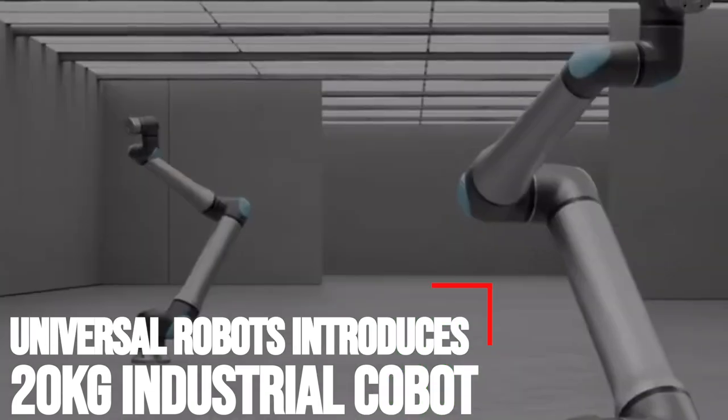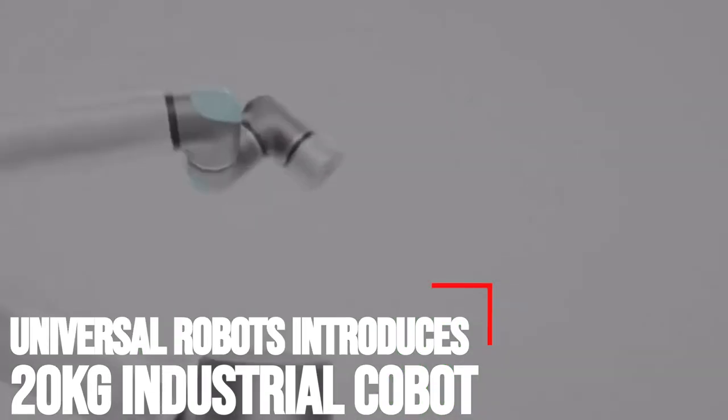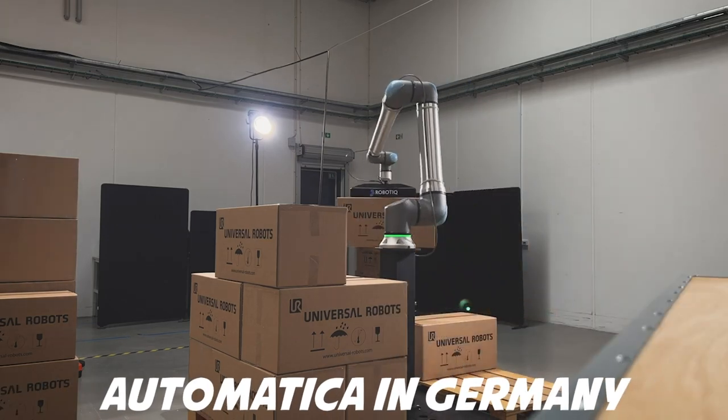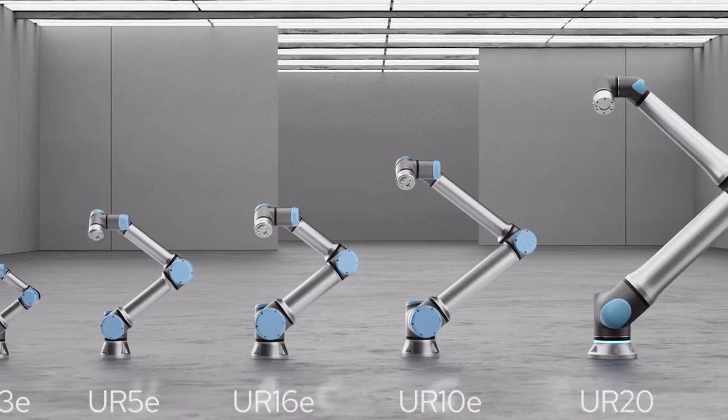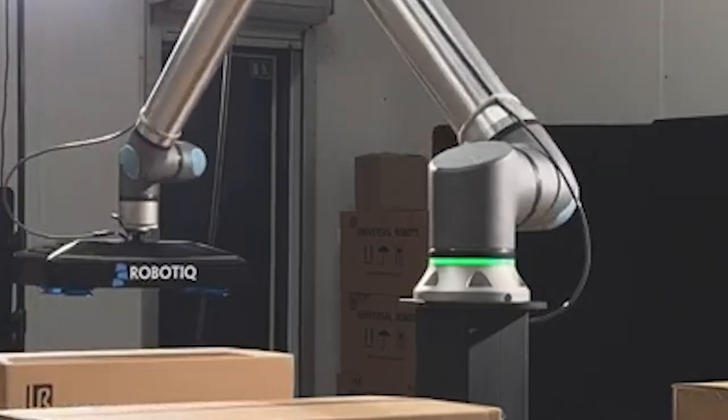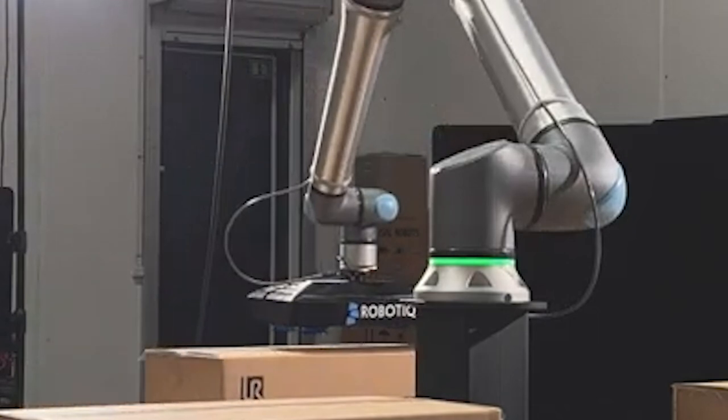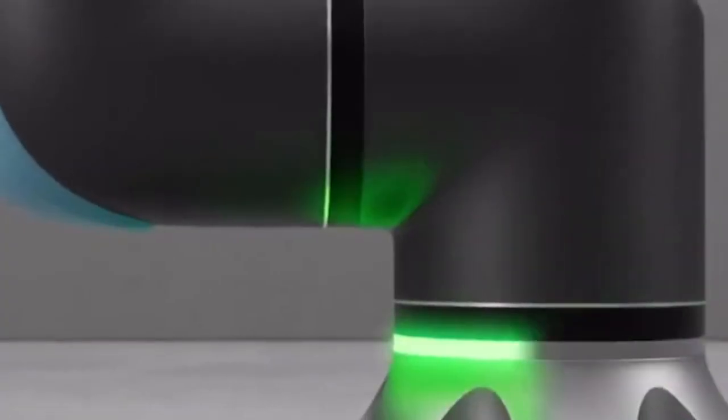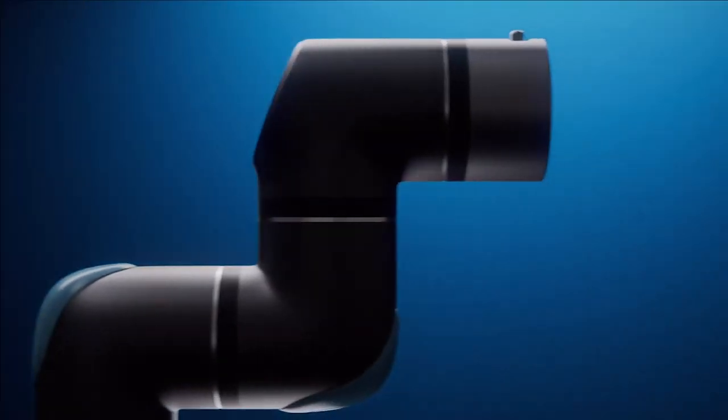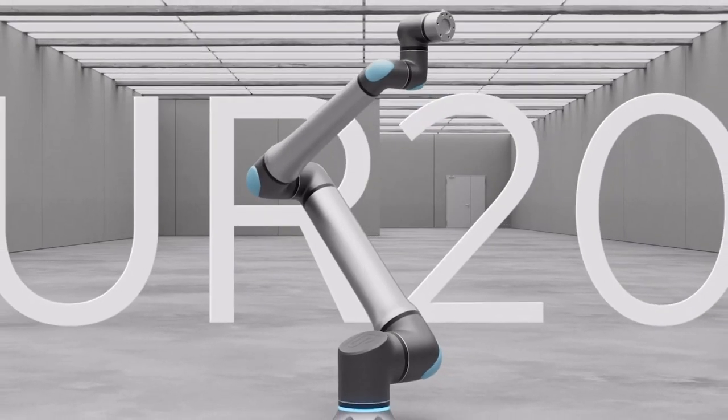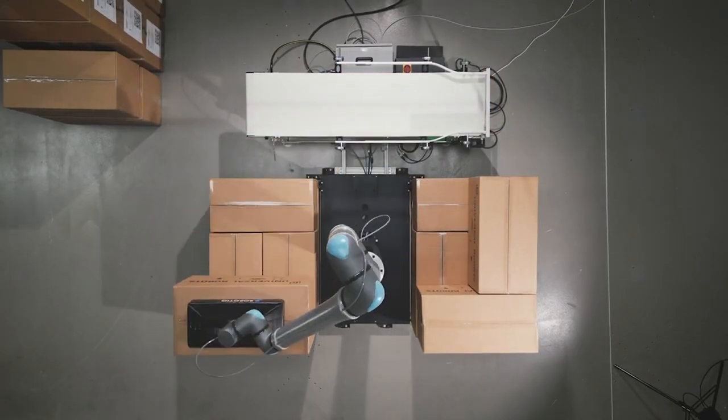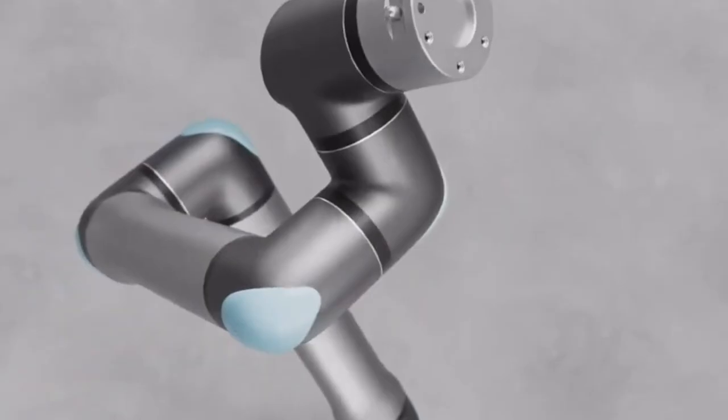Universal Robots introduces 20kg Industrial Cobot. The UR-20 was revealed at Automatica in Germany recently. It is the lightest long-reach 20kg payload collaborative robot on the market, featuring unrivaled performance. The new joint design increases all joint torques approximately 25% and joint speeds by as much as 65%. Universal Robots, the Danish manufacturer of collaborative robots, or Cobots, has announced that it will add this 20kg Cobot to its product range.